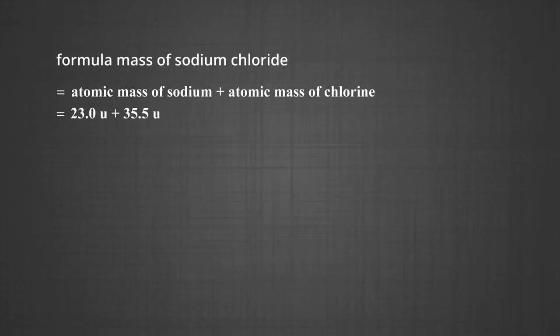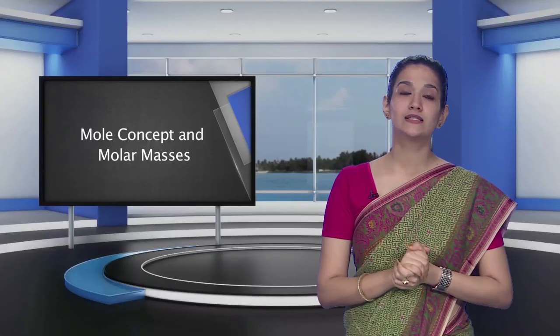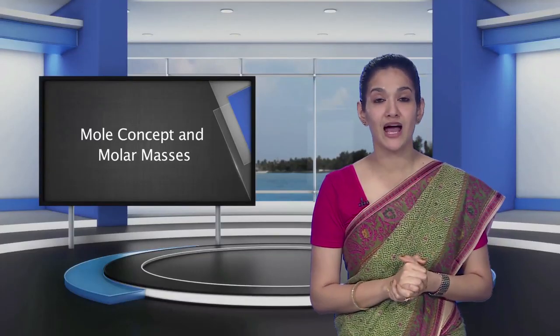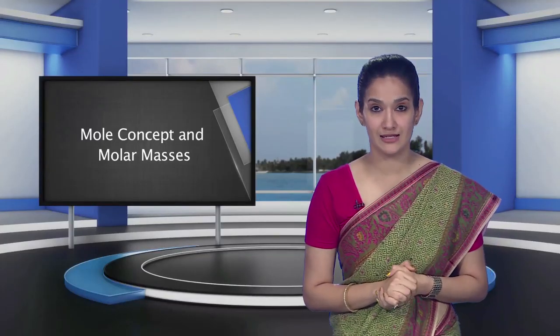Thus, formula mass of sodium chloride = atomic mass of sodium + atomic mass of chlorine = 23u + 35.5u = 58.5u.